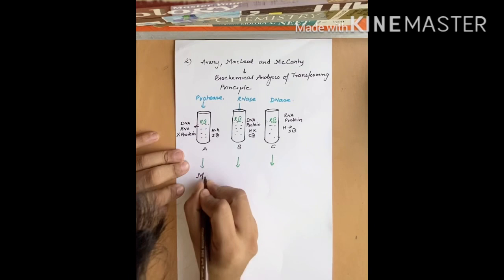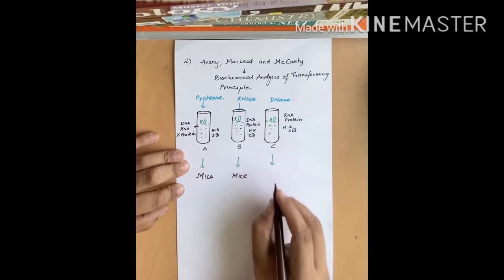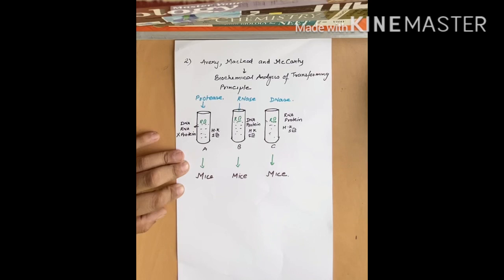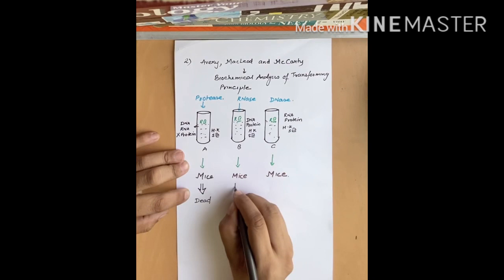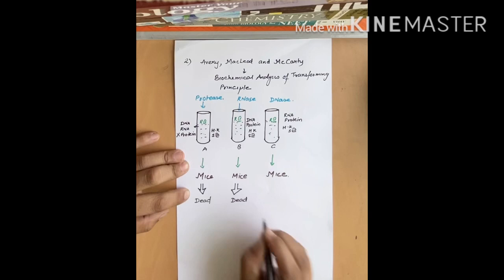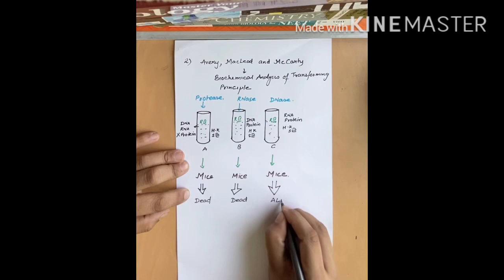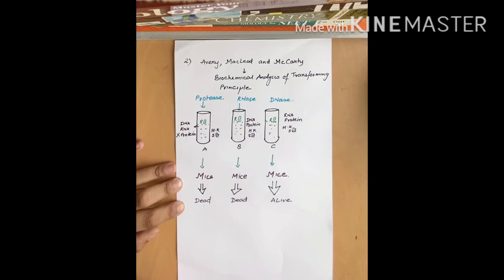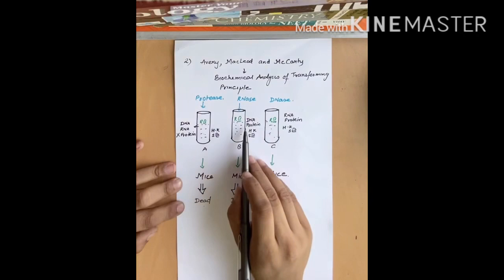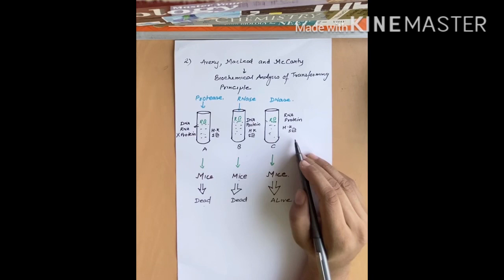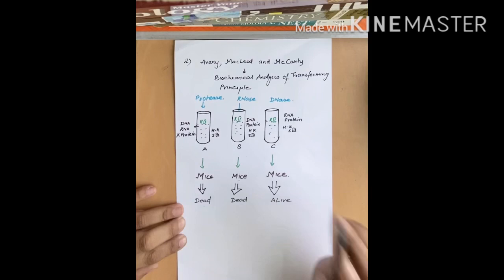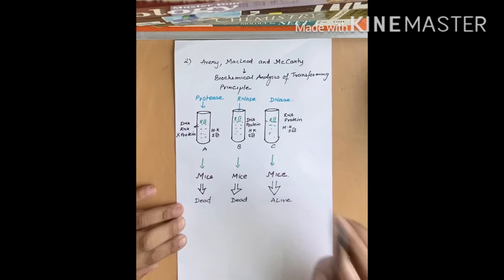They inoculated samples from all three test tubes into mice and observed the results after a period of incubation. They found that mice from test tube A were dead, mice from test tube B were dead, but mice from test tube C were alive. This clearly indicated that protein was not the transforming element, since it was missing in A and mice still died. RNA was not the transforming element either, since it was missing in B and mice still died. In sample C, only protein and RNA were present with no DNA, so the R2 strain was not transformed and the mice survived.